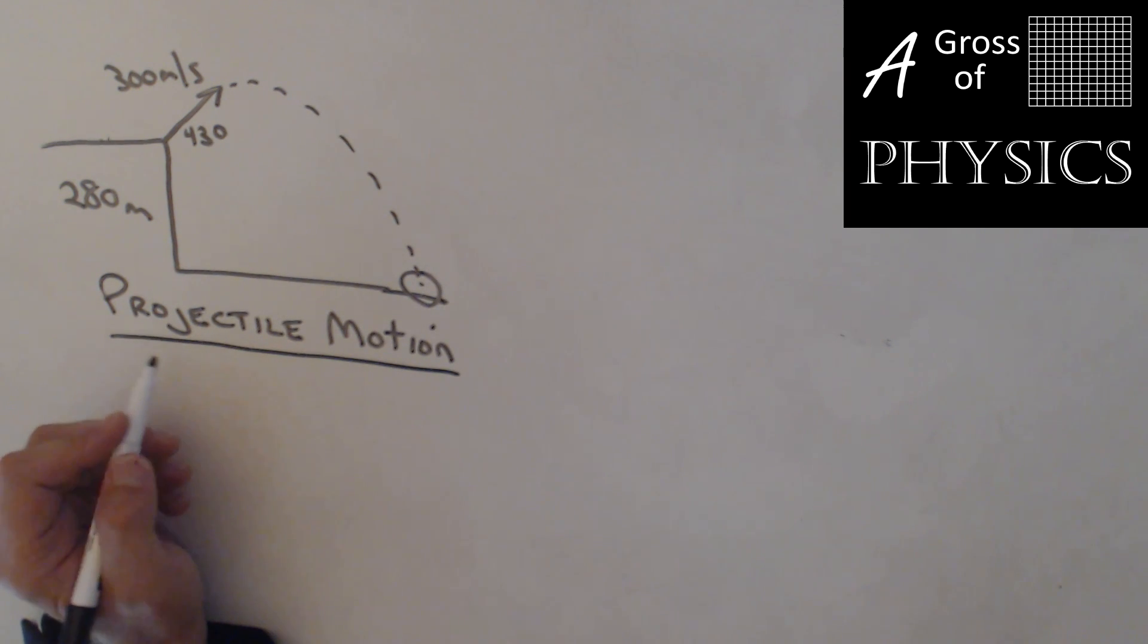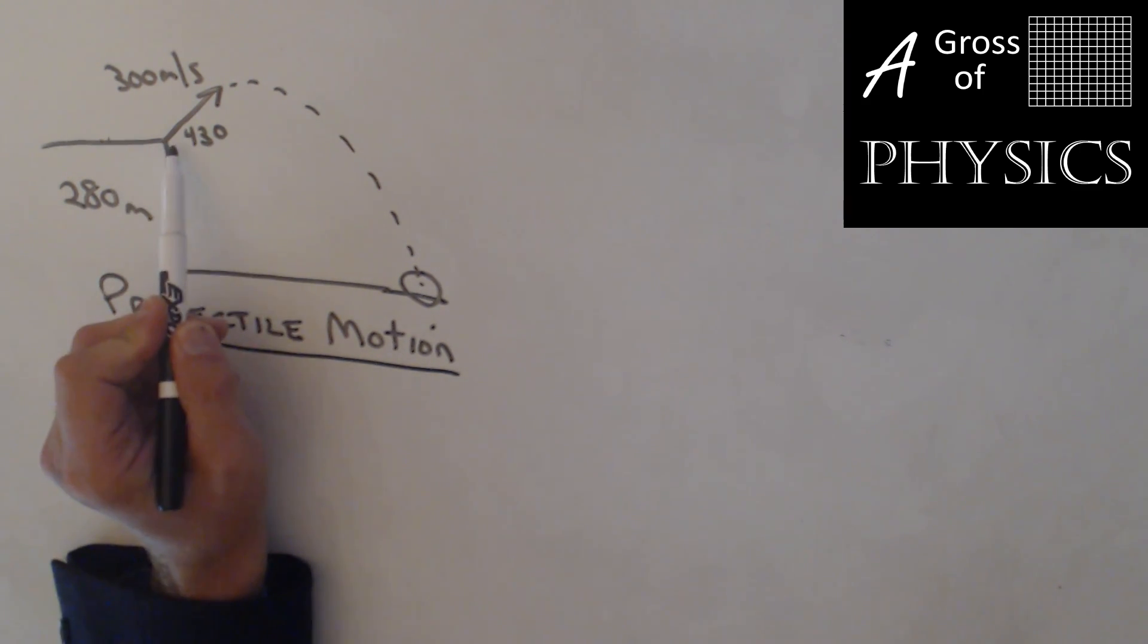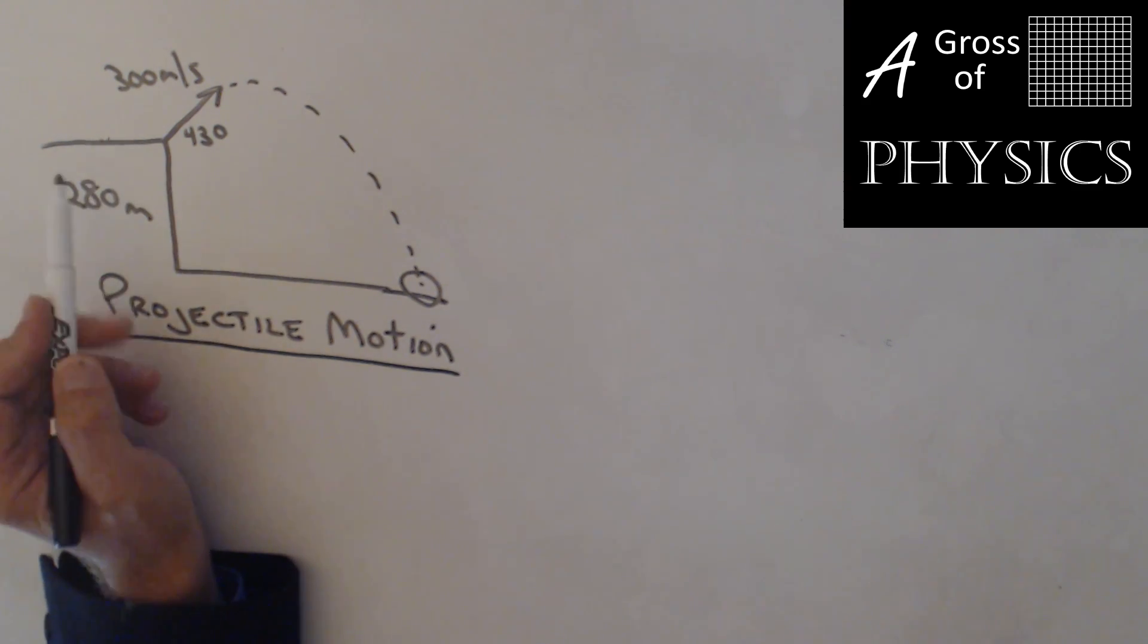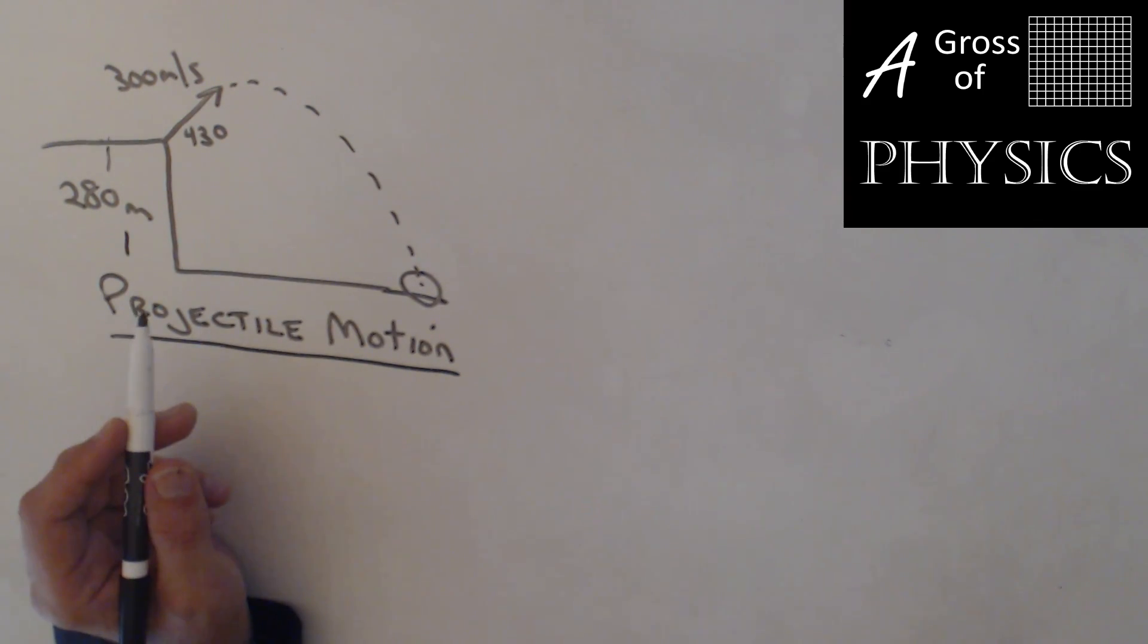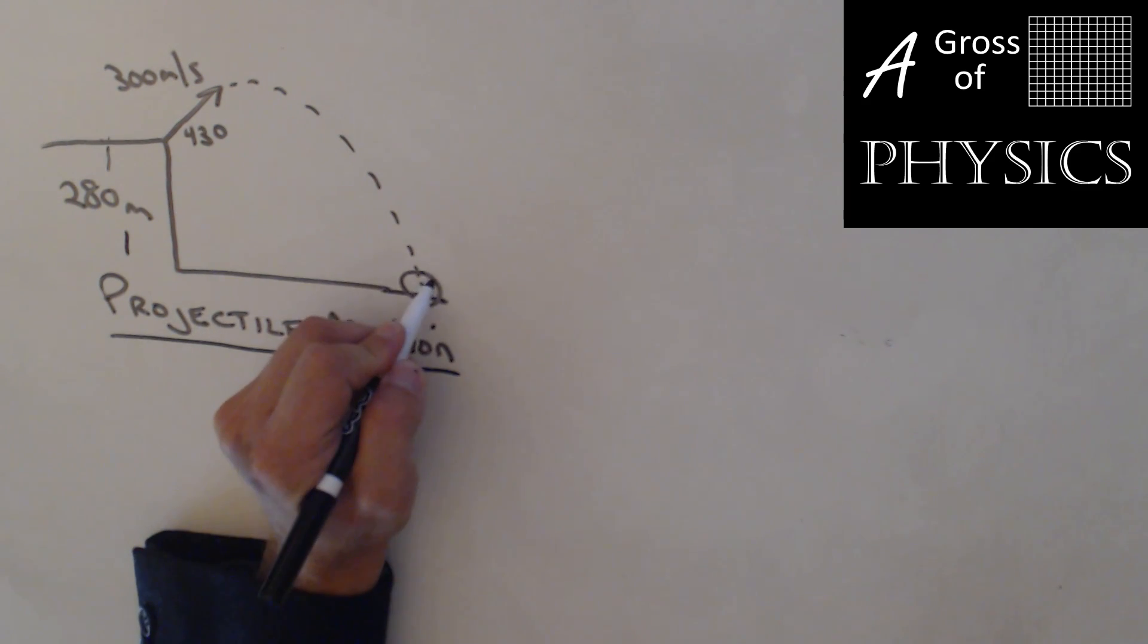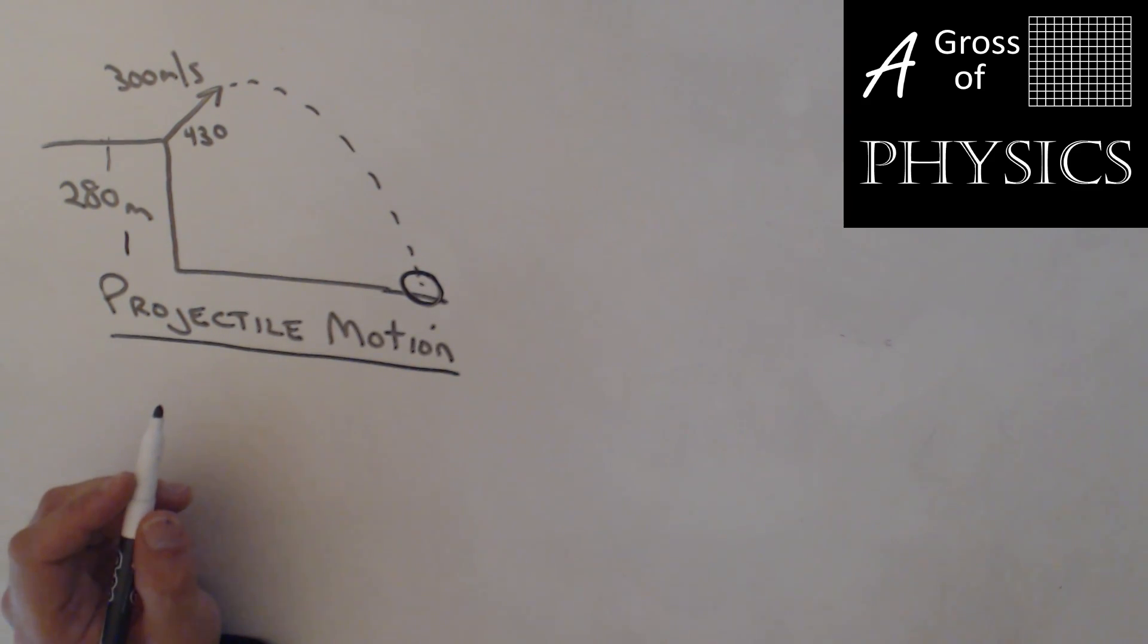I'd like to revisit projectile motion. What we're going to do is solve this problem using projectile motion, where we have a projectile being fired off of a hill that's 280 meters in the air. It's going to fly through the air and land on the ground. What we want to do is determine the speed of the projectile when it hits the ground.